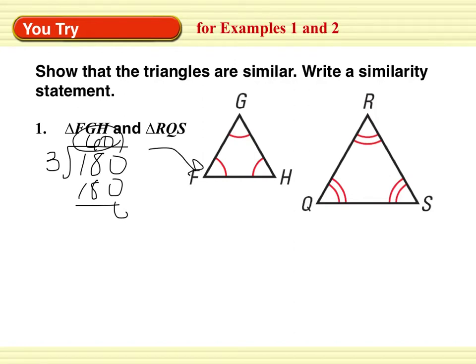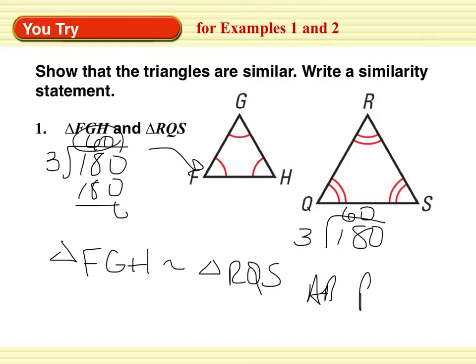So they are all 60 degrees. And here, in triangle RQS, I see three angles that are equal. And again, if three angles are equal, the only way they can all be equal is if they are 60 degrees a piece. So you can say that triangle FGH is similar to triangle RQS because of the angle angle postulate.